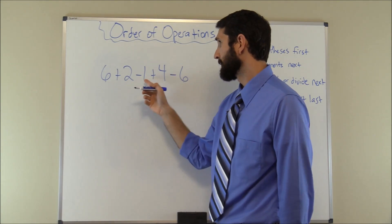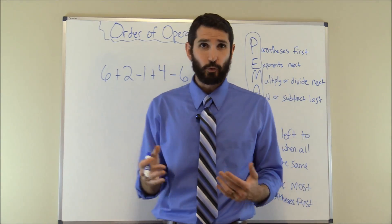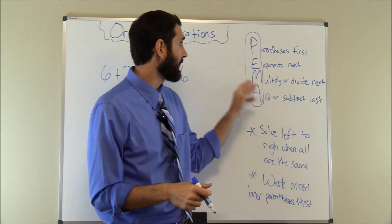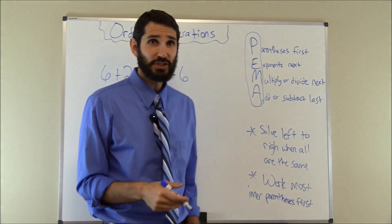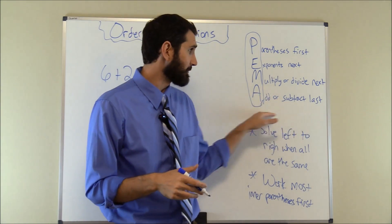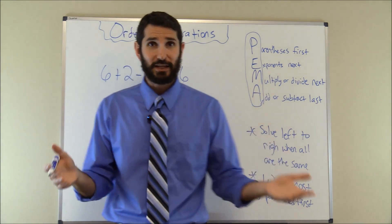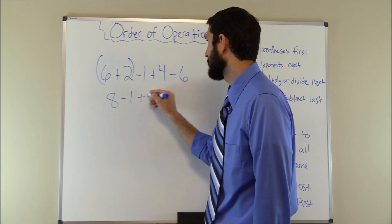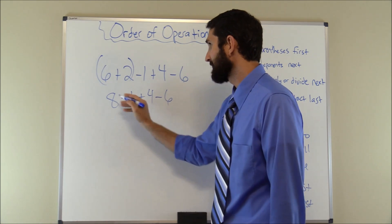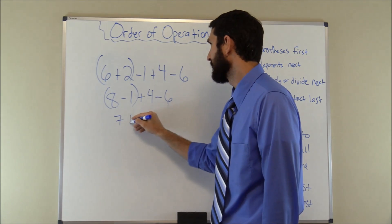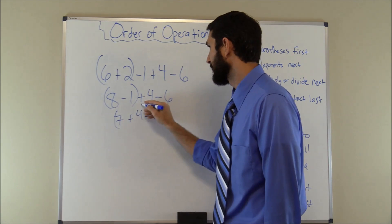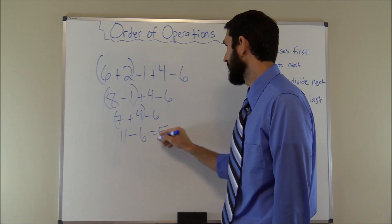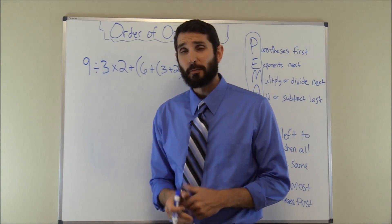Our next problem is 6 + 2 − 1 + 4 − 6. We check: no parentheses, no exponents, no multiplication or division — only addition and subtraction. When it's all on the same line like this, we work left to right. 6 + 2 = 8; 8 − 1 = 7; 7 + 4 = 11; 11 − 6 = 5. That's our answer.